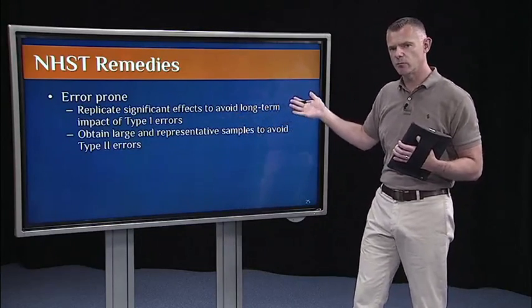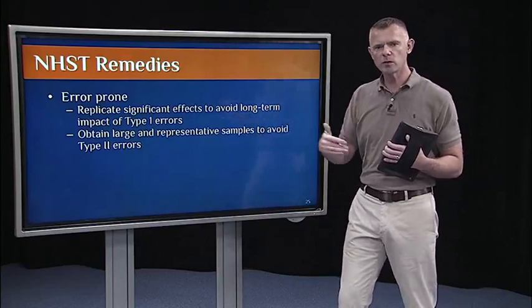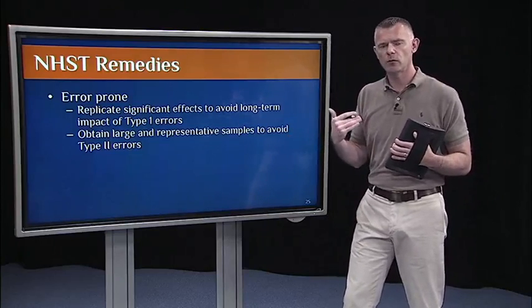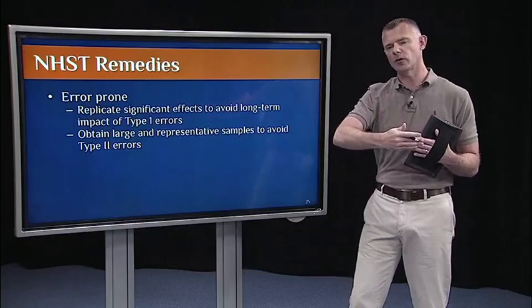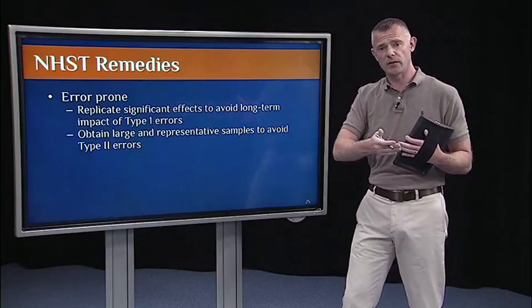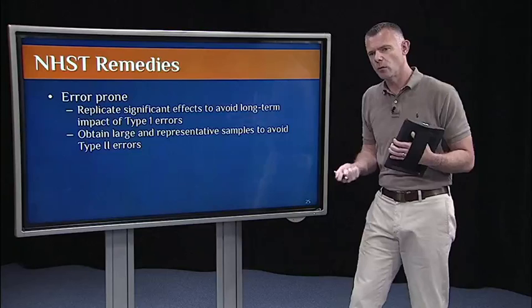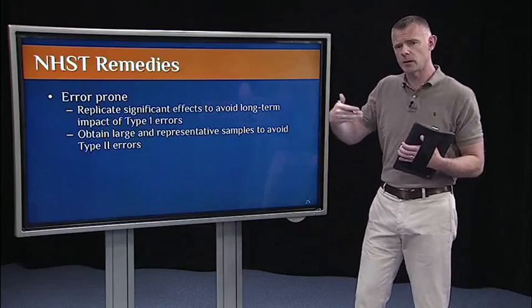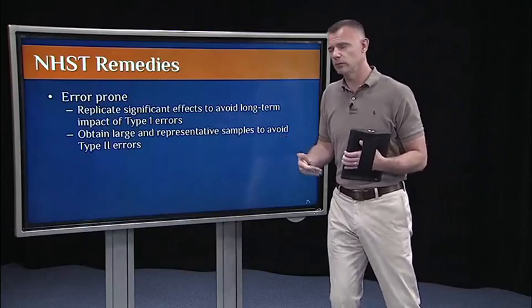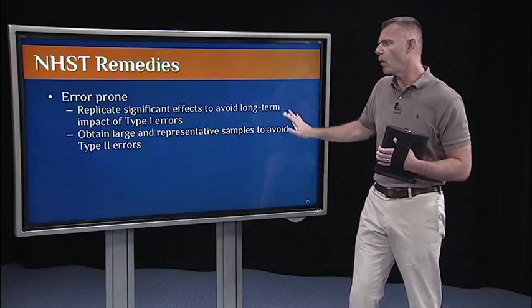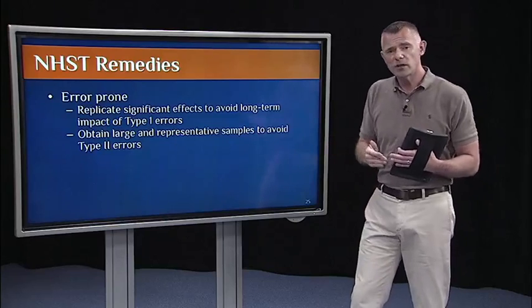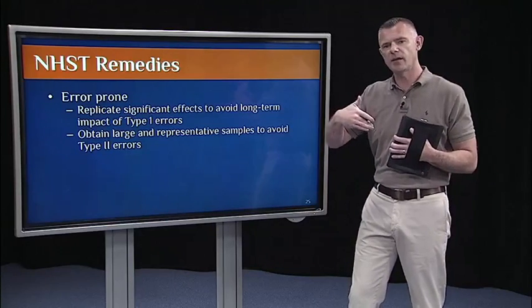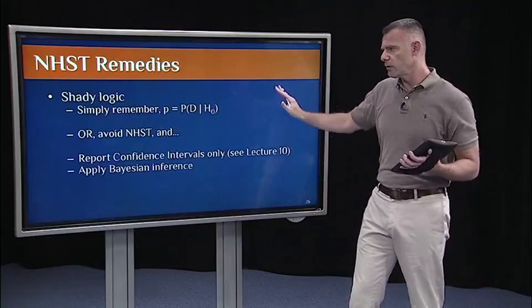In terms of the tests being error prone, there are several steps we can take to protect against the impact of those errors. So, number one, most importantly, replicate significant effects to avoid the long-term impact of type one errors. So, for example, go back to lecture one, when we talked about the effect of working memory training on intelligence. Those authors found that there was a significant effect, right? But that might have been a type one error. So, we need to replicate that effect over and over again so that the entire literature and society at large doesn't start to believe that that's a real result. So, significant effects need to be replicated to avoid long-term impact of type one errors. To avoid type two errors, simply obtain large random representative samples. That'll give you a shot at obtaining an effect if it exists in the population.